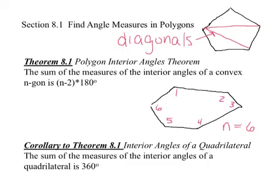And we're going to use that as a way to figure out what the interior angles of a polygon is. So here we have our first theorem, theorem 8.1, polygon interior angle theorem. The sum of the measures of the interior angles of a convex n-gon is (n-2) times 180 degrees. So in this example, n is the number of vertices. This is a 6-gon, which is actually a hexagon, but we would plug in 6 minus 2 times 180 degrees.